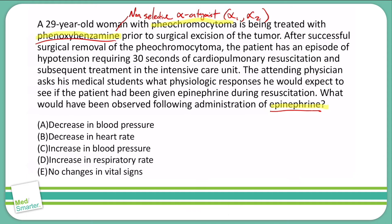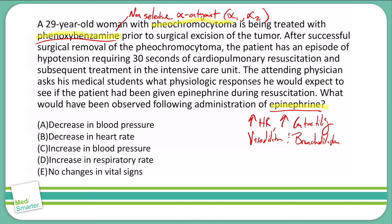So what would beta receptor effects only cause? We would see an increase in heart rate and an increase in contractility. We will also see some vasodilation and bronchodilation. Our increase in heart rate and our vasodilation are the two main things we're looking at based on these answer choices. Will it decrease our blood pressure? That vasodilation will most certainly possibly decrease our blood pressure, so I think A might be an option. Does it decrease our heart rate? No — we are increasing heart rate because of increasing our contractility with our beta-1 agonist. So B is not a correct answer.